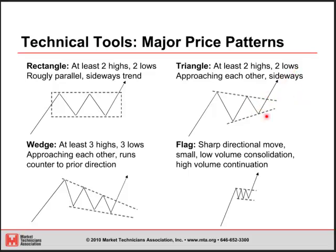A wedge is somewhat similar to a triangle, but here you're looking at at least three highs and three lows still approaching each other, and the entire move tends to have a bias counter to the prior direction. In this case, we had been heading higher — you're now looking at three highs and three lows, and the entire move is heading a bit lower. Then once you've broken out, you're continuing the preceding move.